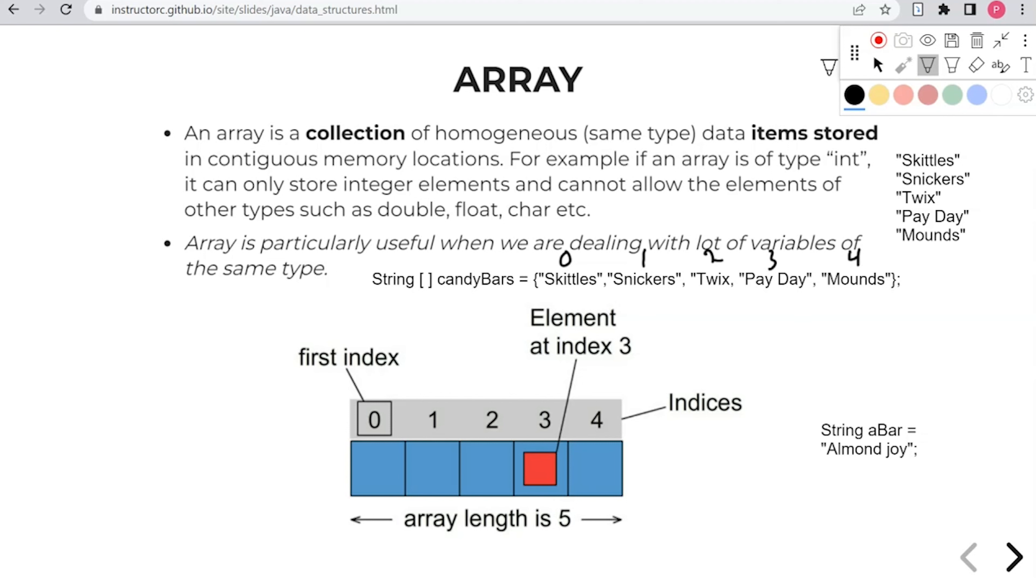The total length of our array or the total number of items within our array is five. Even though the array starts in terms of the first item in the array starts at position zero, there's a total of one, two, three, four, five items in our array. So that's the length of our array.